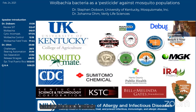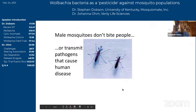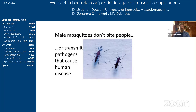I first want to start by acknowledging the many collaborators and funding agencies without which this work would not be possible. My name is Stephen Dobson. I'm a professor of entomology at the University of Kentucky and also the CEO of this university spinoff named MosquitoMate. Dr. Ohm and I have the benefit of building on the previous presentations in the series. In listening to the prior lectures on irradiated and genetically modified mosquitoes, you already know that these technologies are all built on the fact that males don't bite.